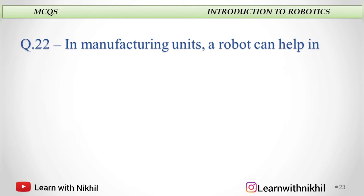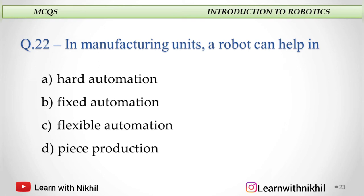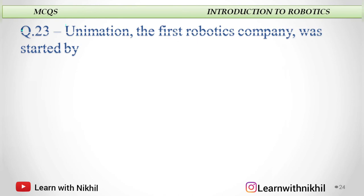Next: In manufacturing units, a robot can help in — A. Hard automation, B. Fixed automation, C. Flexible automation, or D. Peace production. The answer is flexible automation.